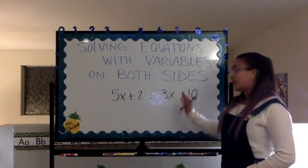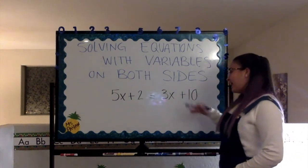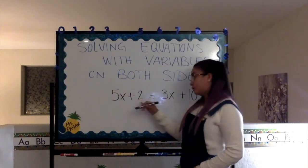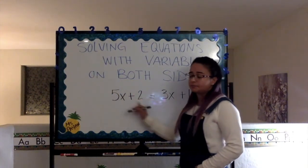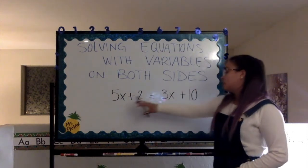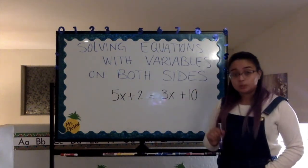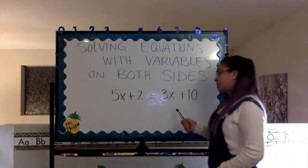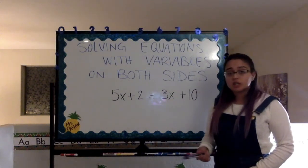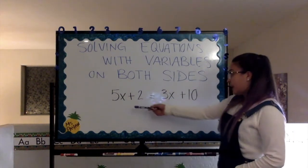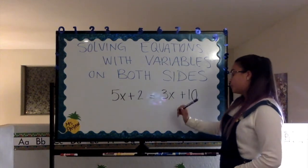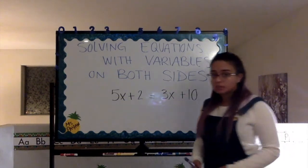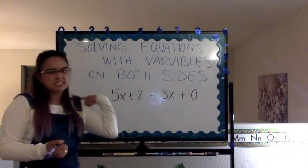We're going to try and get, well, we are going to get our variables on one side of the equal sign. And, our integers or numbers on the other side of the equal sign. So, we can be able to solve for our variable, which in this case is x. We're going to start off with just the numbers. We have 5x plus 2, 3x plus 10. I'm going to start off by moving the 2. It is a smaller number, so I find it easier to do it that way.